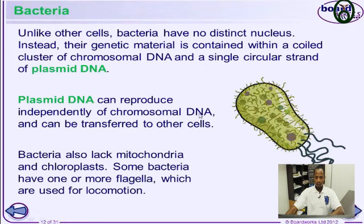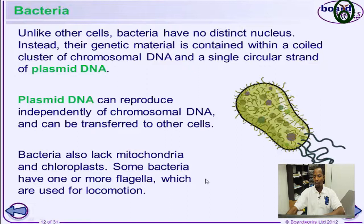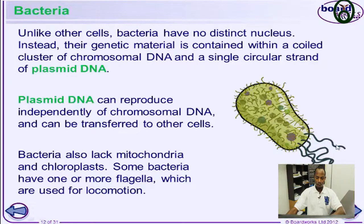Bacteria lack mitochondria and chloroplasts, as we saw. Some bacteria have one or more flagella which they use for locomotion. Depending on the size or type of bacteria, they use this flagella for movement.